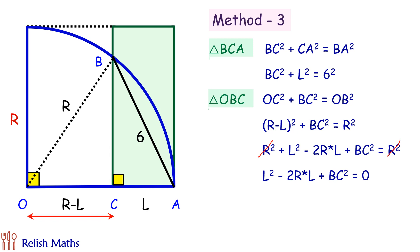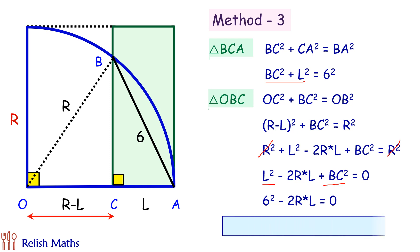Substituting the value of L² + BC² from our first observation (which equals 36): 36 − 2RL = 0, so 2RL = 36, giving R × L = 18. Since R times L is the area of the rectangle, the area is 18 cm².